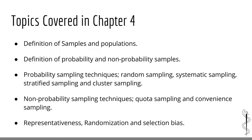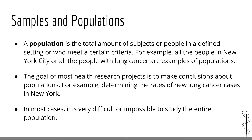In this chapter we are going to define samples and populations, introduce and define probability and non-probability samples, talk about the most common types of probability sampling, briefly discuss non-probability sampling techniques, and finish off by going over the concepts of representativeness and randomization and how these techniques can help decrease the risk of selection bias. So let's get started.